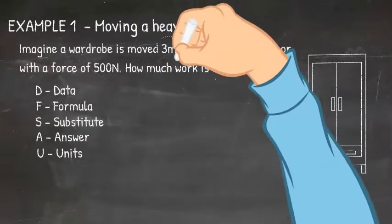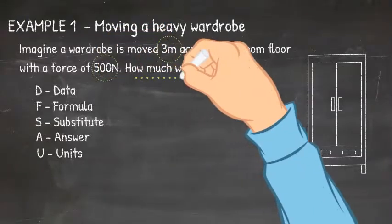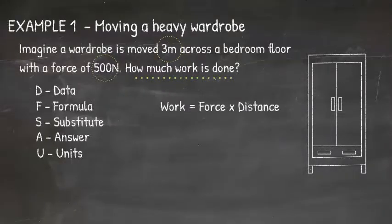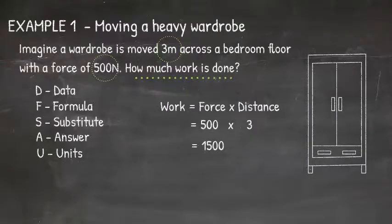The D stands for data, so look at the question and draw a circle around the data that they are giving you and underline what it is they are asking you to work out. Then identify a formula that uses the data they have given you and what they are asking you to work out and write this down. You can use symbols. So substitute the values in from the data in the question. Calculate your answer, you may need to rearrange your equation to do this. And finally, give the units and check for any prefixes that might have occurred in the question.